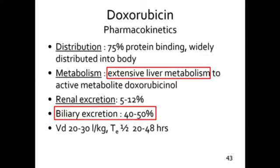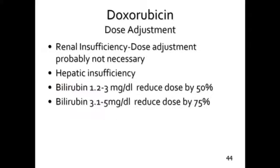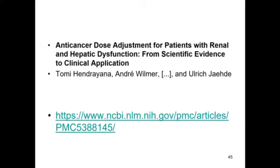Important black box warnings for doxorubicin: extensive liver metabolism, so if they have hepatic failure you need to adjust or hold the dose. Same with elevated bilirubin or transaminases. Dose adjustments for the anthracyclines are different from one another — the percentage decrease for doxorubicin is not the same as for daunorubicin, so you have to look up each agent independently. This is also listed in Lexicomp as a good reference for renal and hepatic dysfunction for chemotherapeutic agents.